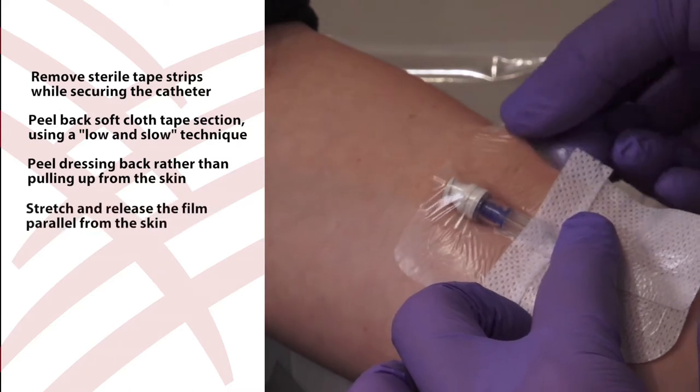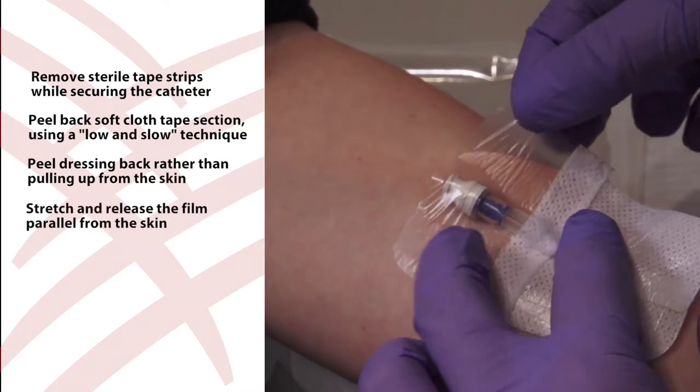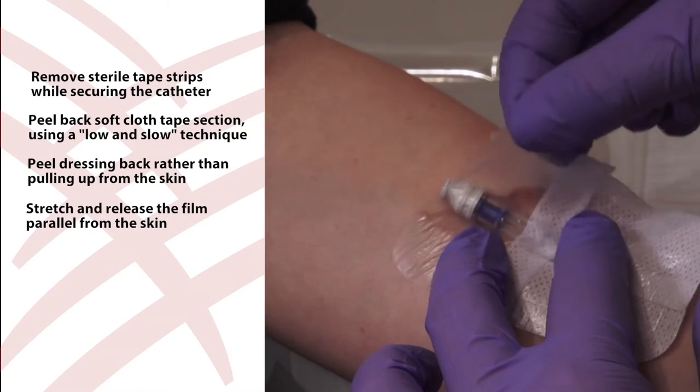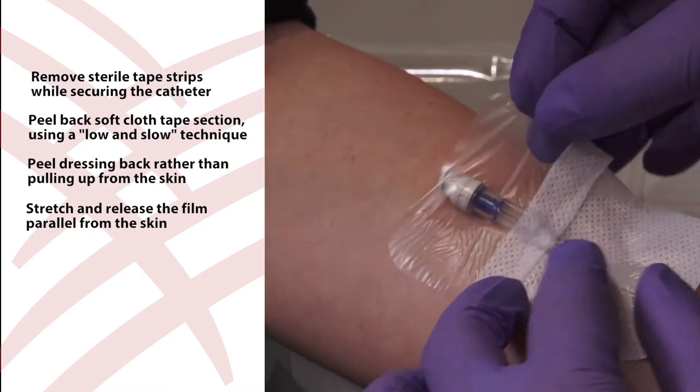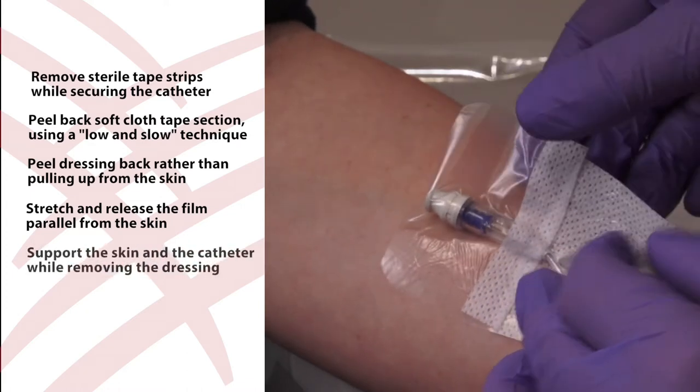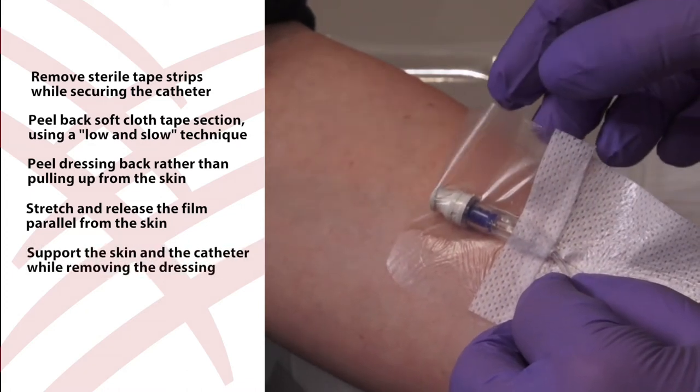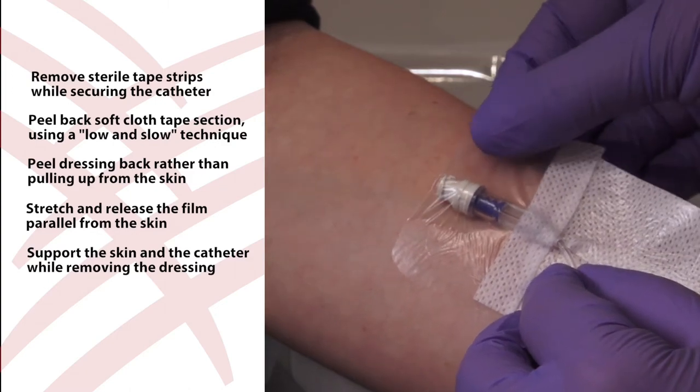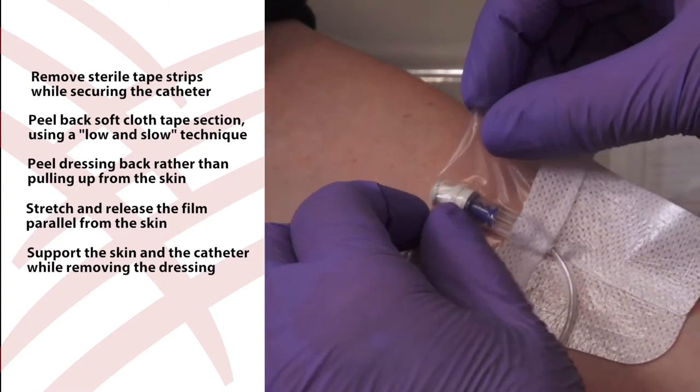Another option is to stretch and release the film section parallel to the skin to break the adhesive bond by grasping one edge of the dressing and gently pulling it straight out. Support the skin and the catheter while removing the dressing. If the dressing adheres to the wound surface, it should be gently soaked off.